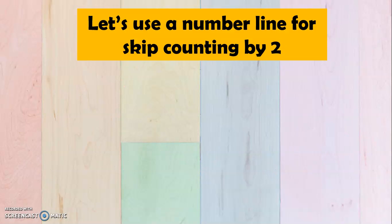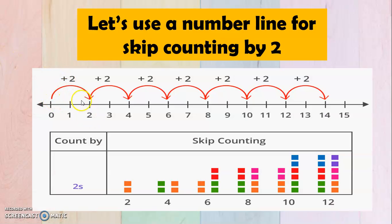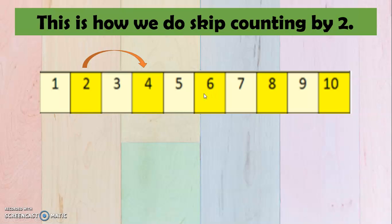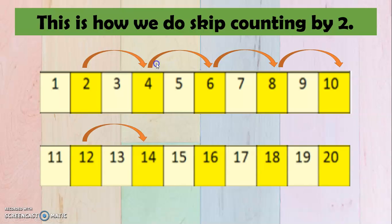Now, my dear grade 1, let's use a number line for skip counting by 2. So we have here 2, 4, 6, 8, 10, 12, 14, 16, 18, and 20.